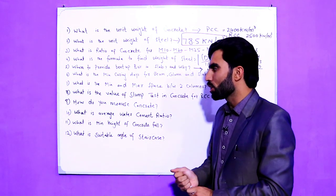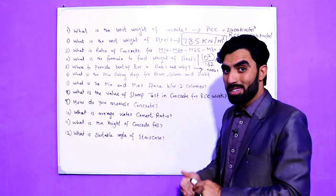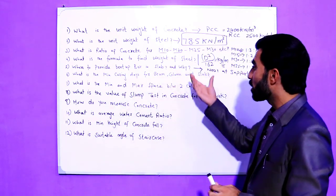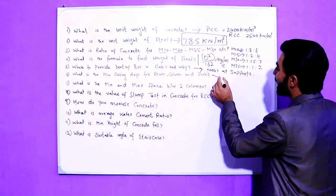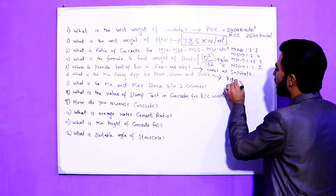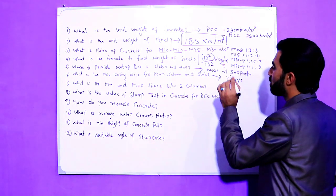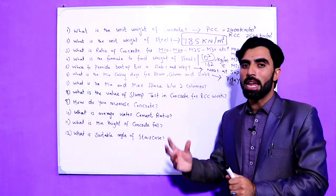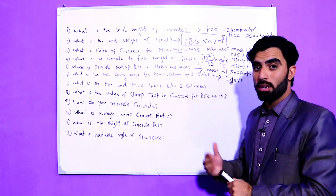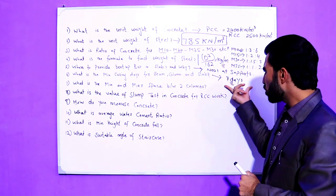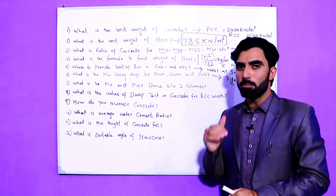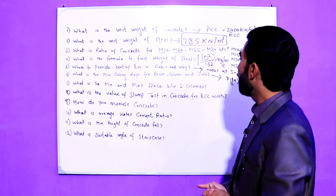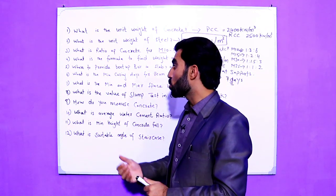The sixth question is very important and often asked: what is the minimum curing period for beam, column, and slab? The answer is seven days minimum. You must cure the concrete for at least seven days — it should not be less than seven days.